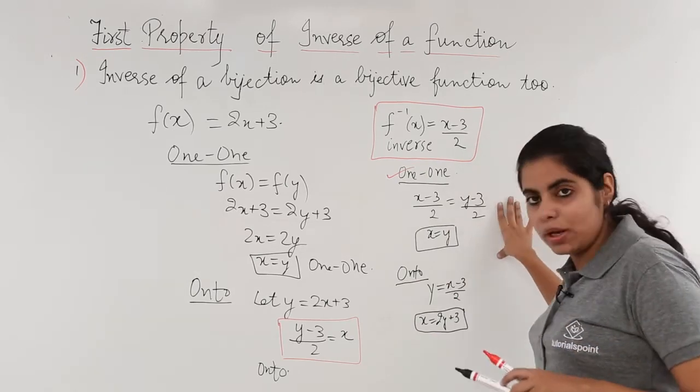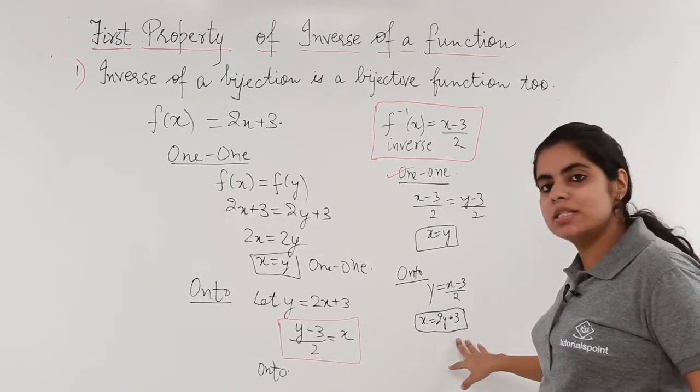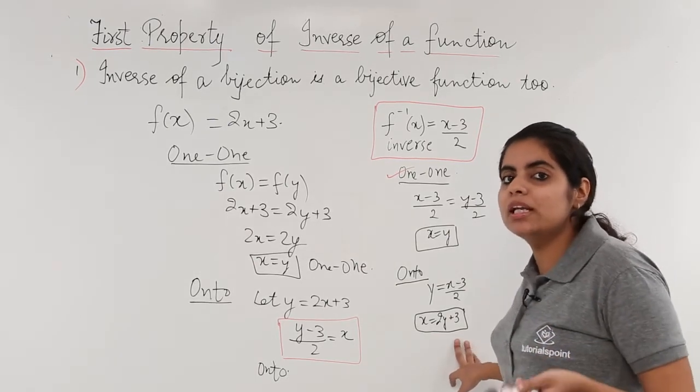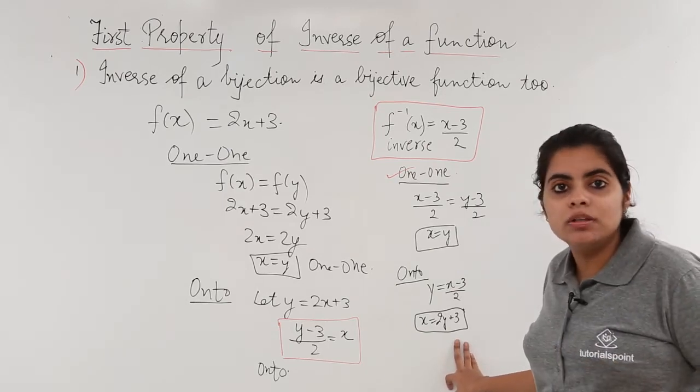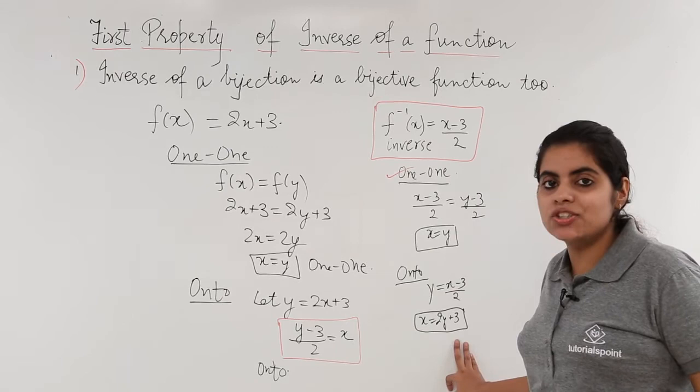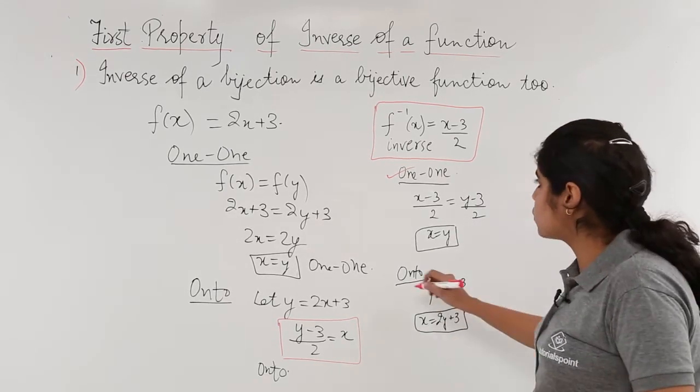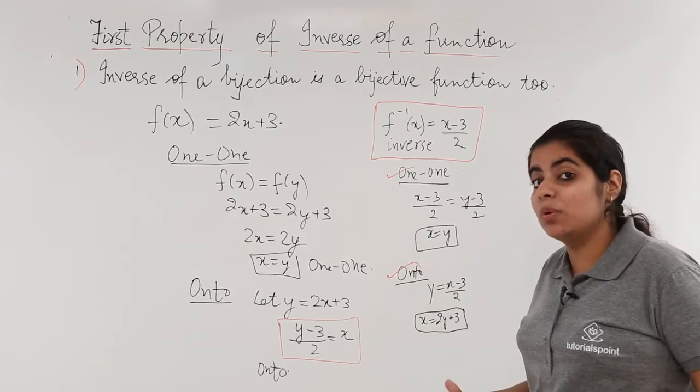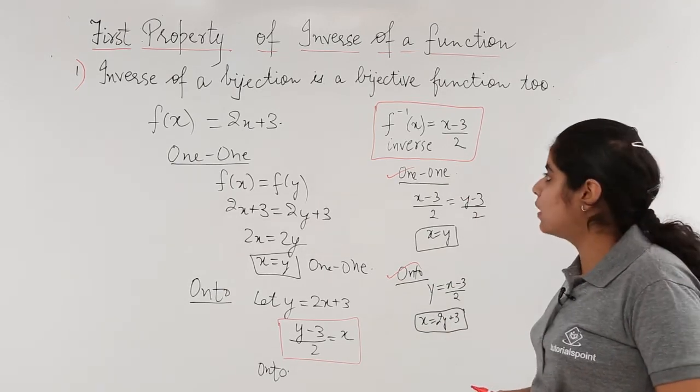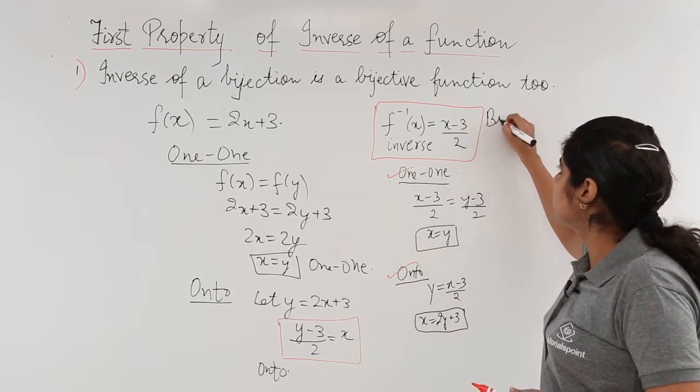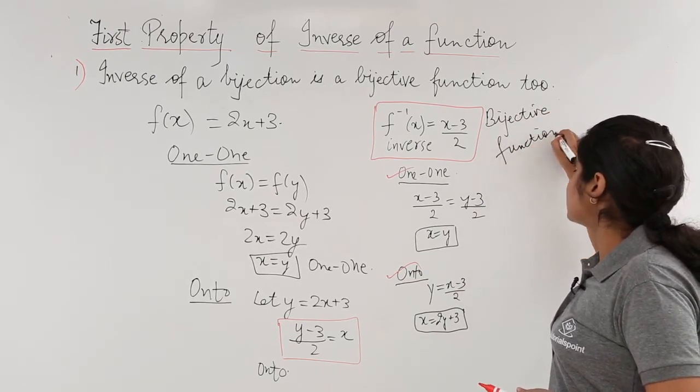I checked it was one-one. I check here for onto. 2y plus 3 - any values that you put, you would definitely find out that the codomain and range are equal. All the elements are associated such that they have a pre-image in domain. So yes, it is onto also. Since my inverse is both one-one and onto, so definitely it is a bijective function, and that is what our property said.